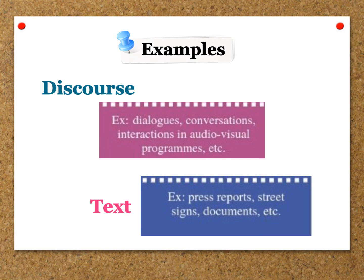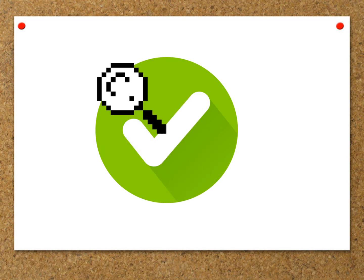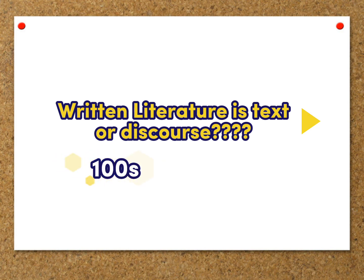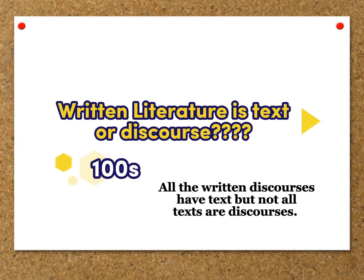So those were the examples of text and discourse, and the differences between them. Now we have another question: is written literature discourse, text, or both? Written literature that is productive and generates social response is discourse. But books or newspaper articles where, over time, the readers are lost and there is no response from society — those we call text. So we can say: all discourses have text, but not all texts are discourses.